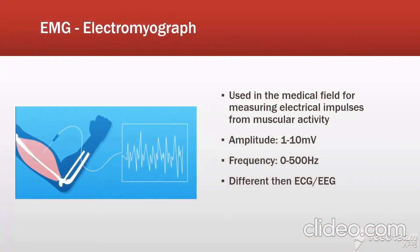So what is EMG? Well, EMG stands for electromyograph, and it's used in the medical field for measuring electrical impulses from muscular activity. It commonly has an amplitude of between 1 and 10 millivolts, and a frequency ranging from 0 to 500 hertz, although it's more commonly found between 50 and 150 hertz. This is different than other biopotentials, which are various electrical impulses that our bodies give off, such as ECG, which measures electrical impulses given off from the heart, or EEG, which is impulses from the brain.